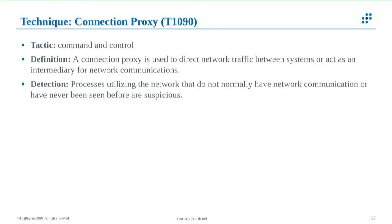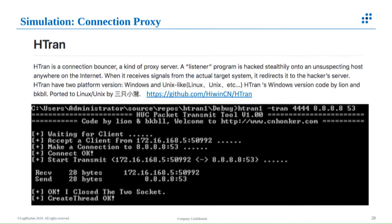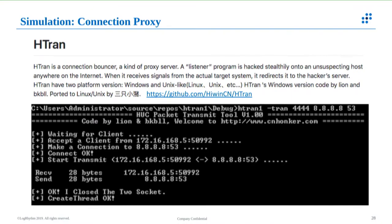Connection proxy — the tactic is under command and control. The definition: a connection proxy is used to direct network traffic between systems or act as an intermediary for network communication. Detection: processes that utilize the network but don't normally have network communications, or have never been seen before, are suspicious. Dan tested this using htrain, a utility referenced within the MITRE technique. Htrain lets you start a listener on a given port so another machine can connect and proxy traffic through to a different destination.